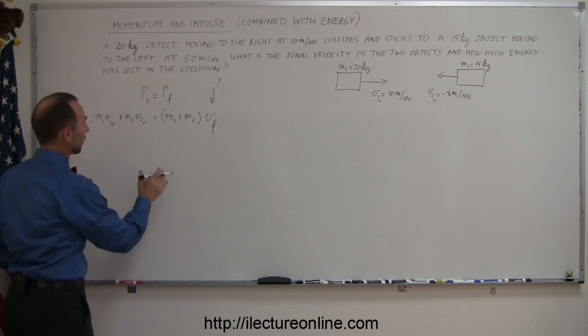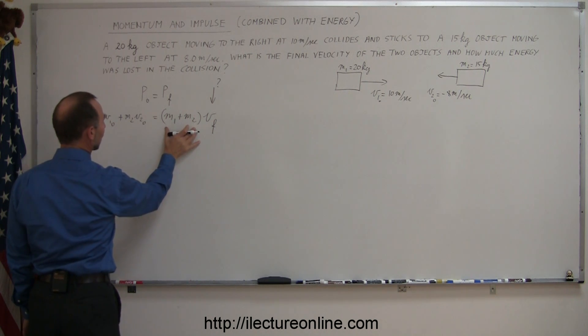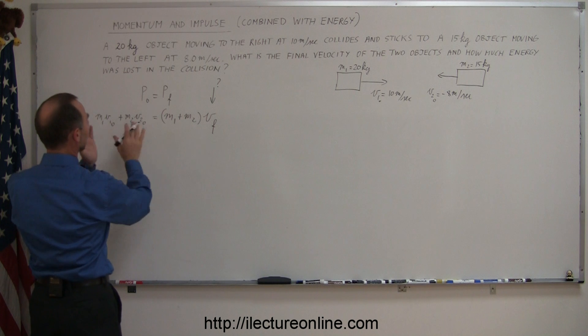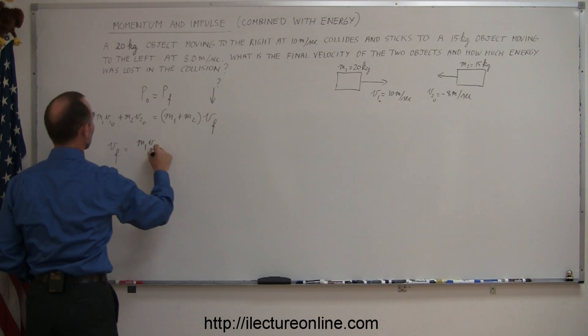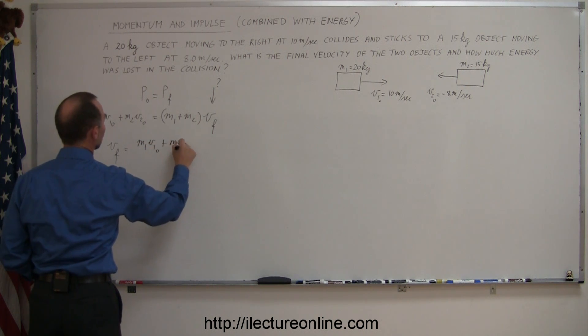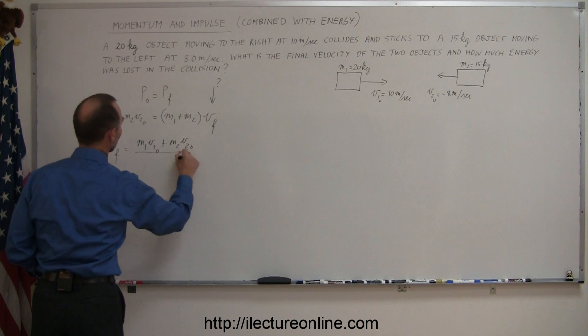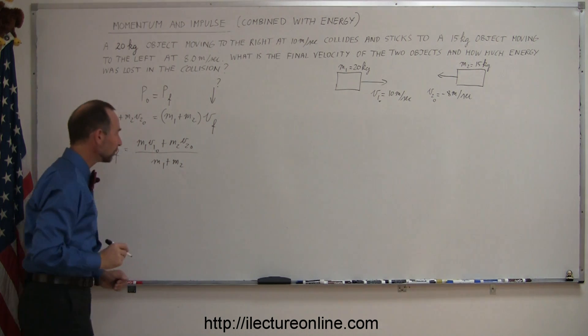So let's solve for final velocity by dividing both sides of the equation by M1 plus M2, putting it over here, flipping the equation around so we can say that V final is equal to M1 V1 initial plus M2 V2 initial, all divided by M1 plus M2.